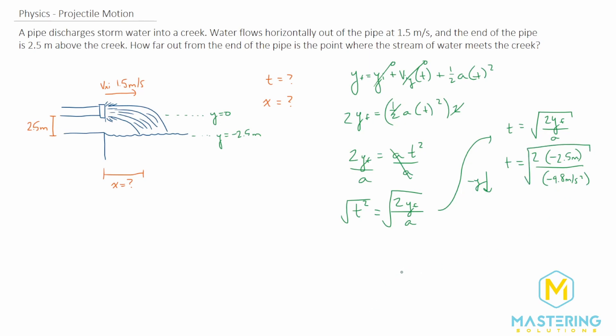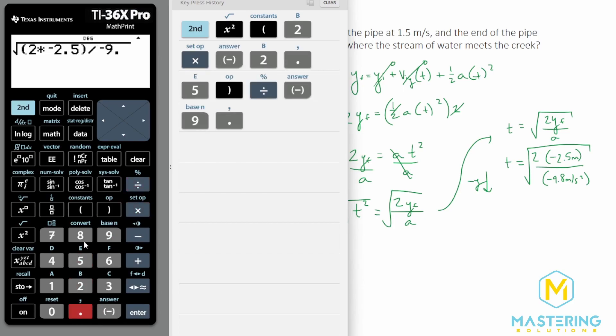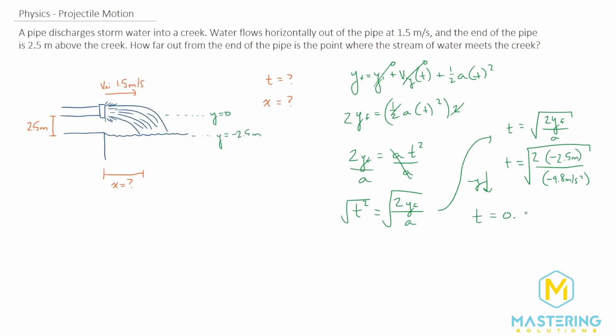We'll take the square root of all of that. So we have the square root of 2 times the y final, negative 2.5, divided by negative 9.8, which gives us a time of 0.714 seconds.